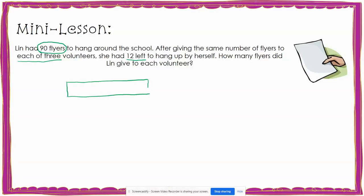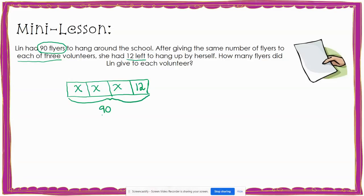I know that Lynn gave each volunteer the same number of flyers, but I don't know how many flyers that was. Since there were three of them, I'm going to break my bar diagram into three pieces to show the three groups of flyers she gave away, and use a variable x to represent that. I also know that Lynn had 12 remaining, so I'll add another section for 12. Since the total is 90 flyers, I'm going to use brackets to show that this entire thing equals 90.